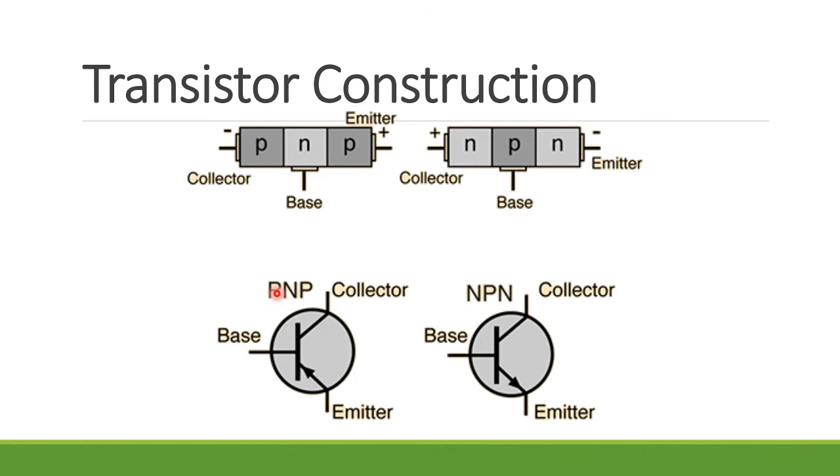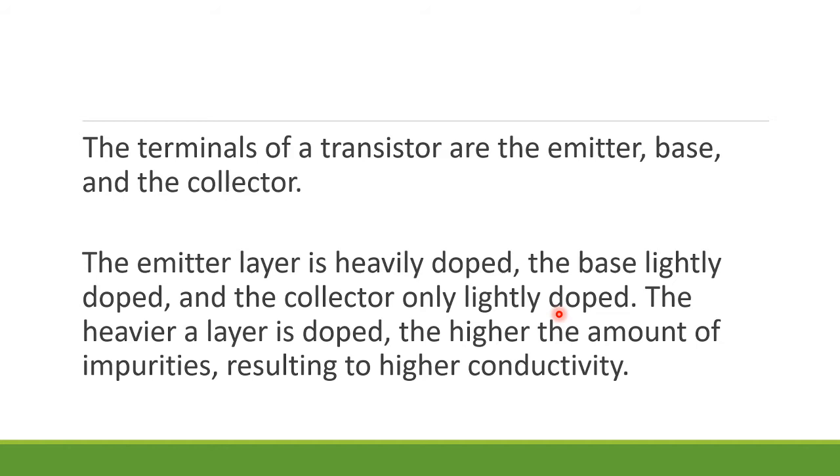For the PNP, the symbol is like this. Our mnemonics for it - PNP, and the arrow is going in. So we call it 'pasok na pasok' because it's going in. Whichever has the arrow, that's the emitter. Next, for NPN, it's going out. So if the arrow is going out, that means 'napasok na'. That's the mnemonics we use for this one. Again, the three terminals are the emitter, base, and collector.